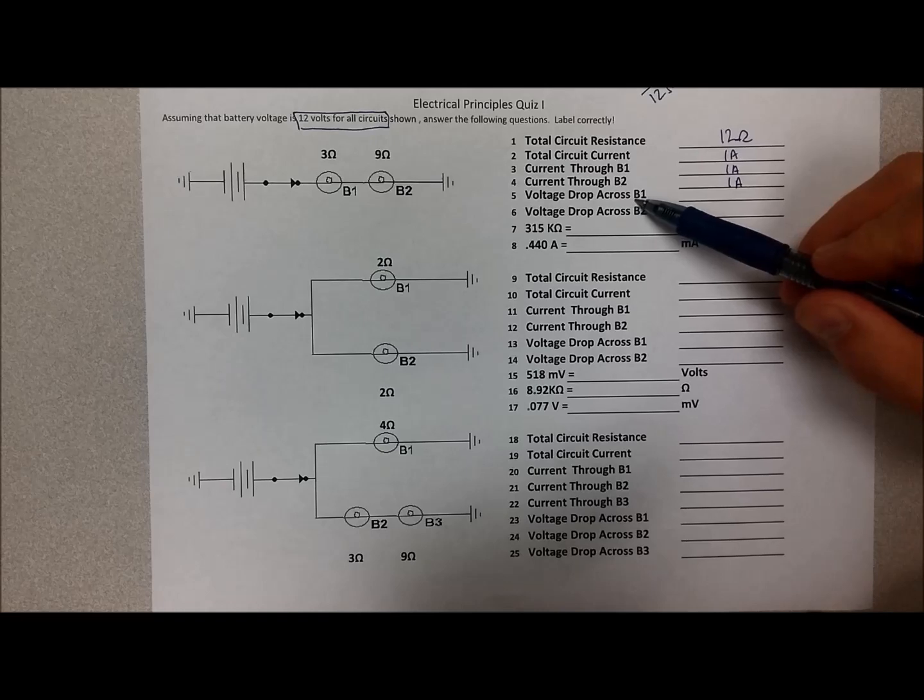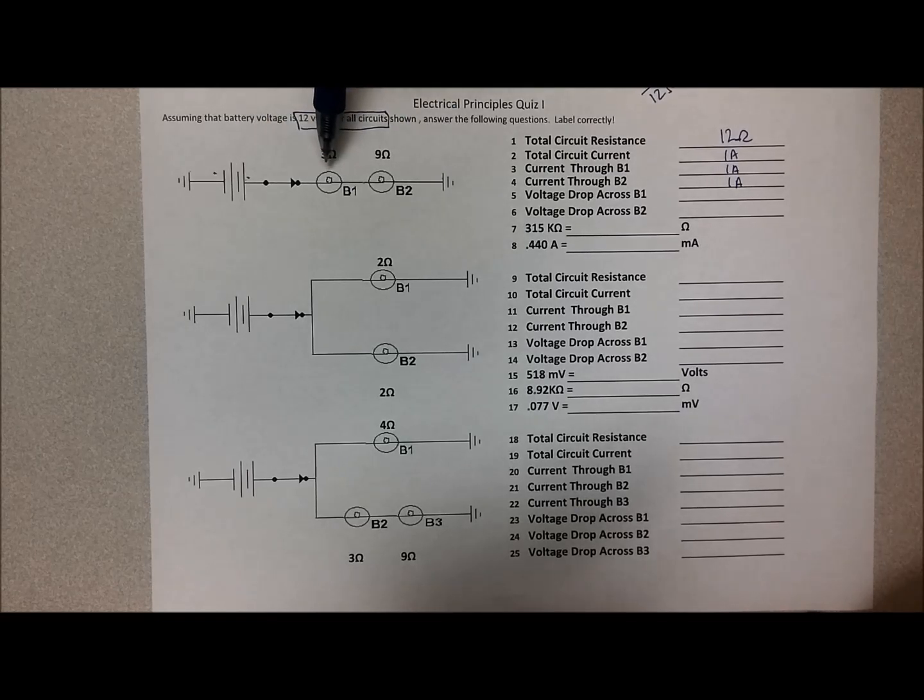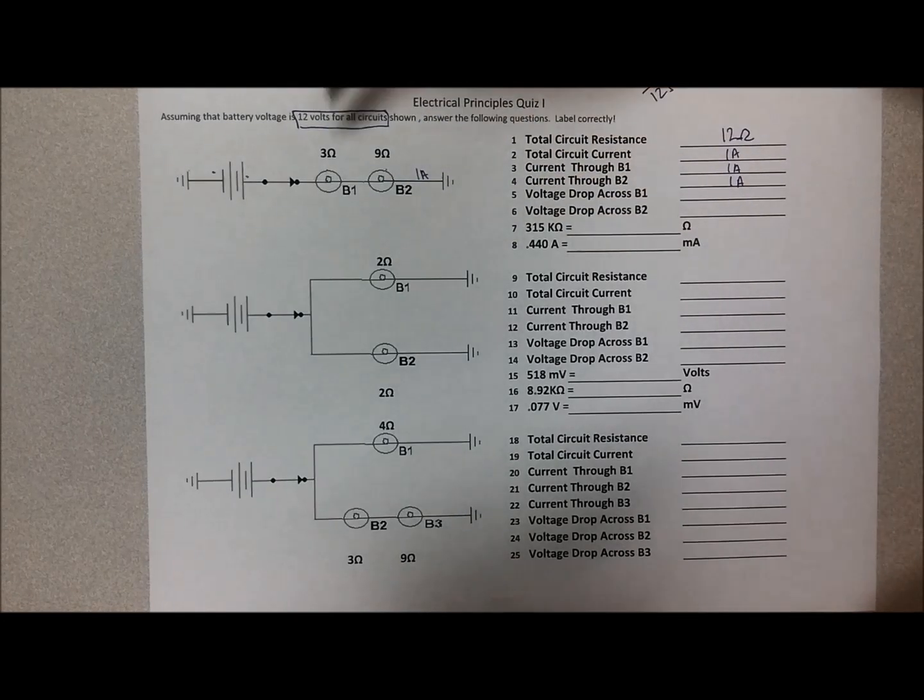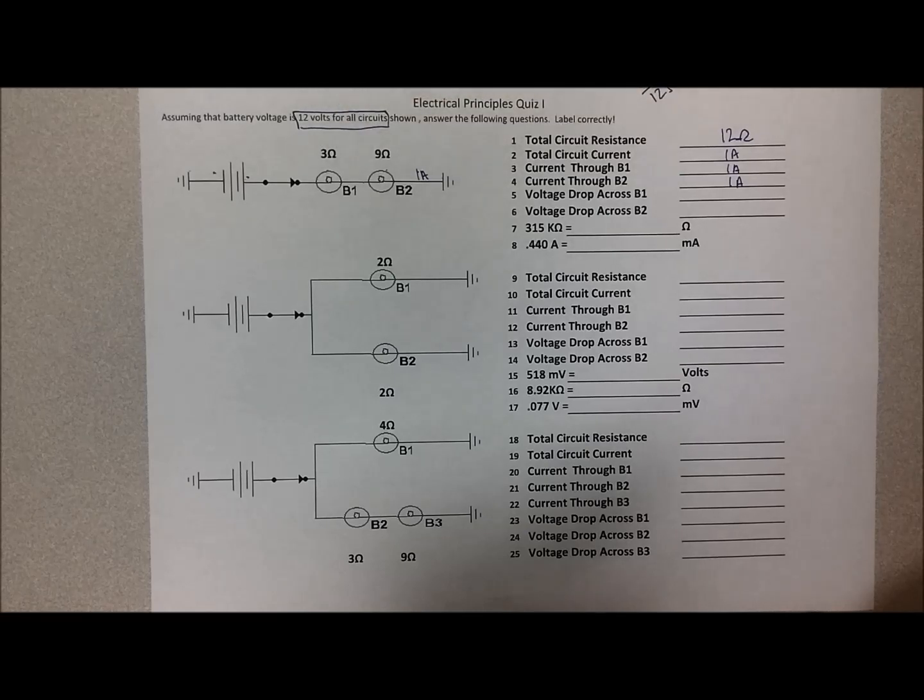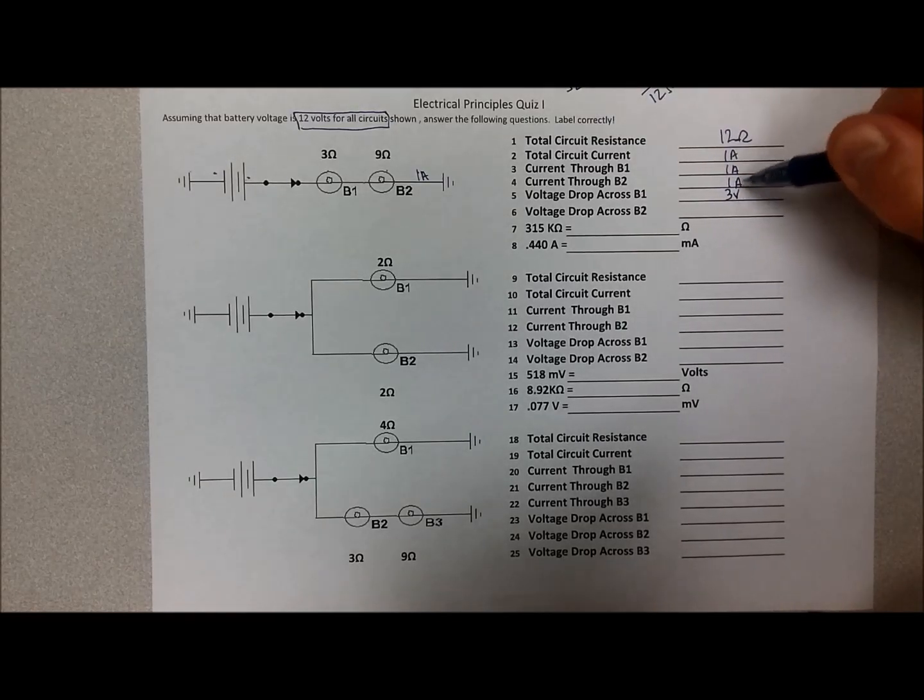The next one says what does the voltage drop across bulb one? Now when it comes to voltage drop, we know that we have 12 volts of the battery. So we started out with 12 volts on the positive side and zero volts on the other side. So all 12 volts has to be dropped throughout the circuit and if things are functioning correctly, the bulbs will drop to 12 volts. However, because there are two of them, we've got to figure out how that voltage is split up between the two bulbs. The easiest way to do that is by taking the one amp that we said was flowing through this circuit here, one amp times three ohms, that's Ohm's law again. So if we multiply one amp times three ohms, that tells us that we have three volts.